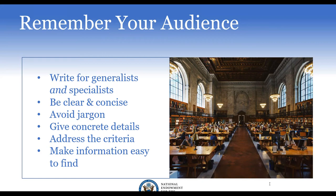Make sure your proposal addresses the review criteria in a clear and explicit way. Avoid field-specific jargon and catch phrases — use language that can be understood by anyone. Give concrete details and make information easy to find by using the required section headers. If we haven't specified formatting, think about what makes most sense to a reader — for example, organizing your bibliography by topic area or by the courses you're revising rather than alphabetically.